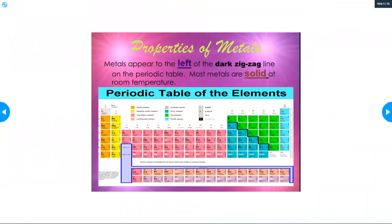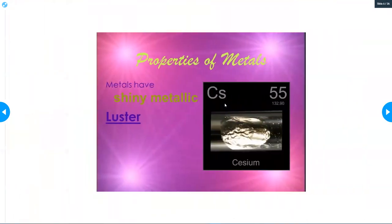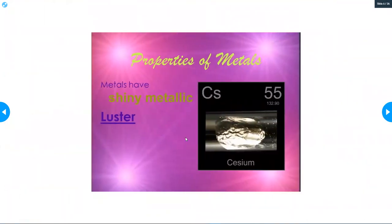So metals - if you look at this slide too, you can see that there are all kinds of different metals here. Metals appear to the left of the dark zigzag line on the periodic table. Most metals are solid at room temperature. Here are some properties of metals: metals have shiny metallic luster. So luster is one of the properties we're going to be looking at to determine if an object is metal, nonmetal, or metalloid. For a metal, it's going to be shiny metallic.